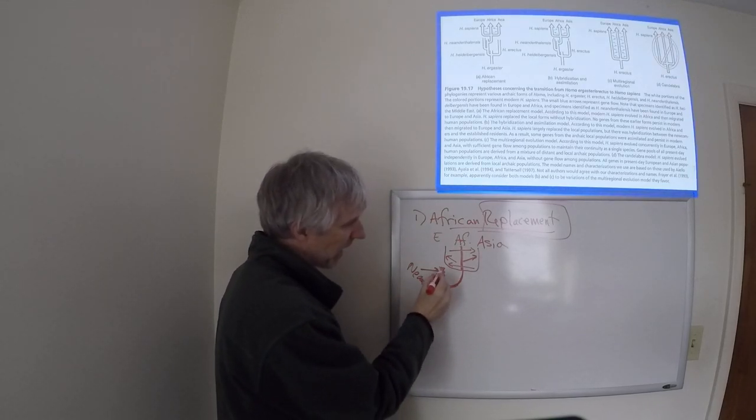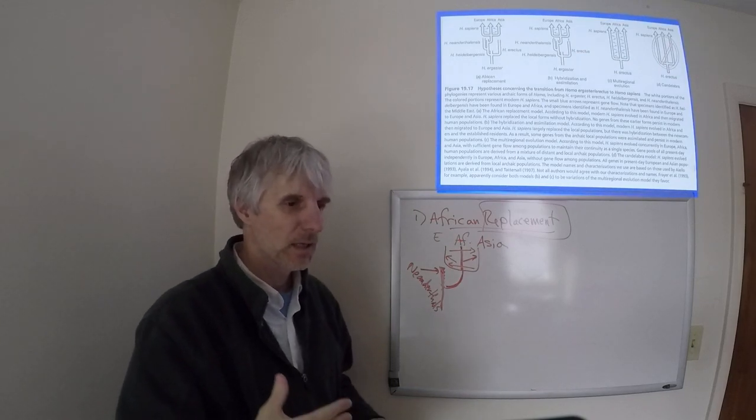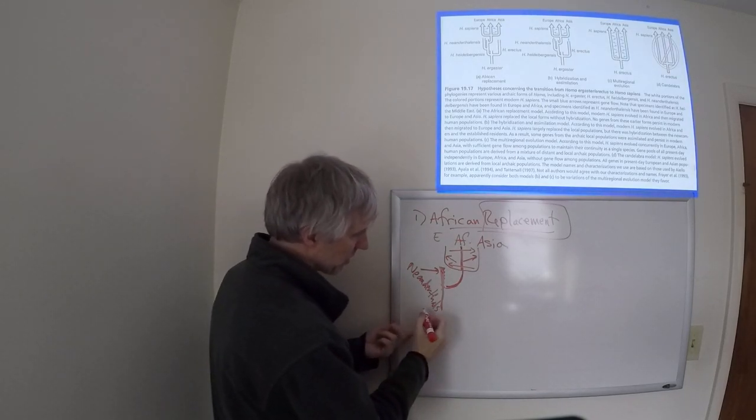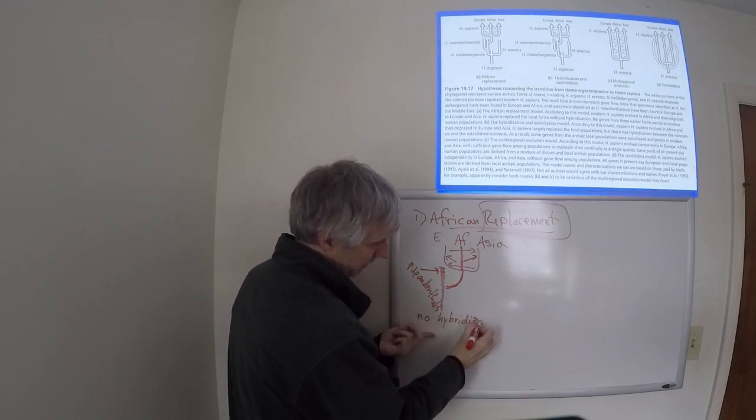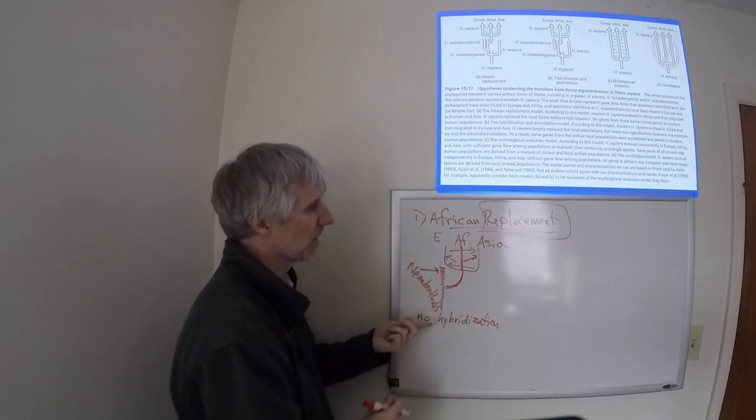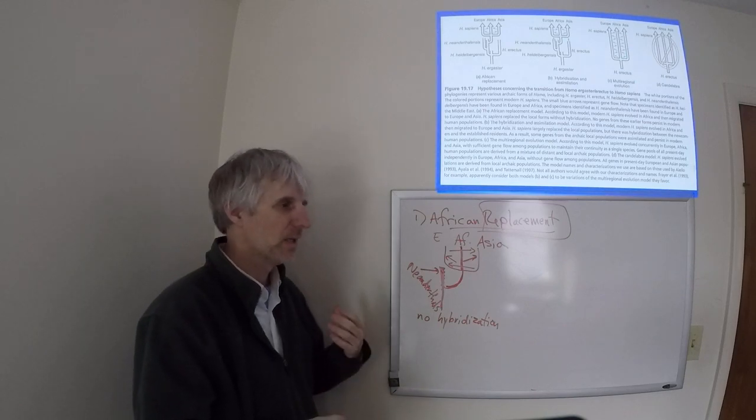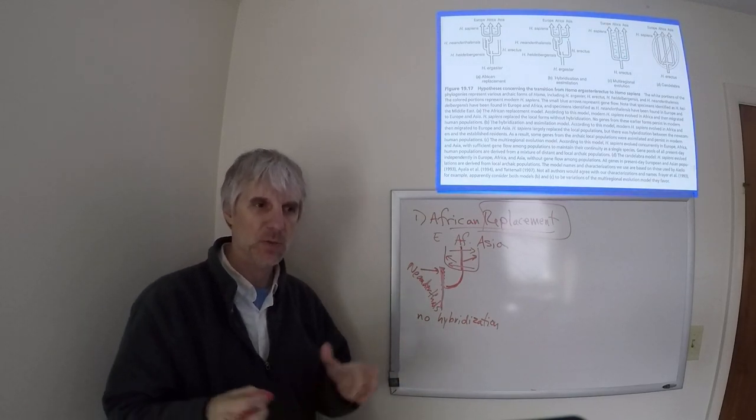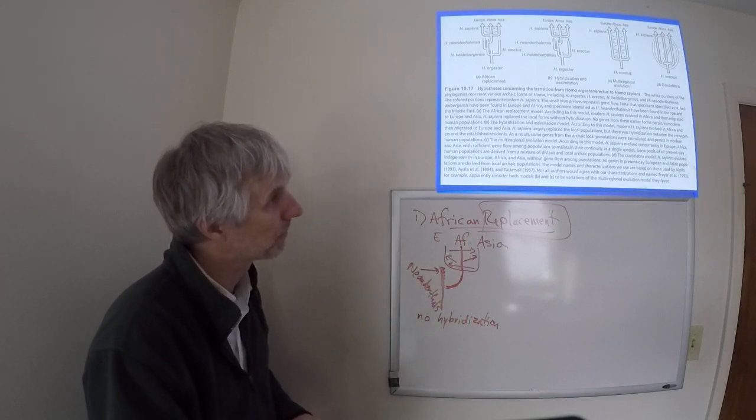And there's nothing genetically in the Neanderthals that is also in modern-day Homo sapiens. This model says there's no hybridization. In other words, Homo sapiens was not mating with Homo neanderthalensis. If they were mating together, that would be a hybridization because we're talking about two species coming together to produce an offspring.